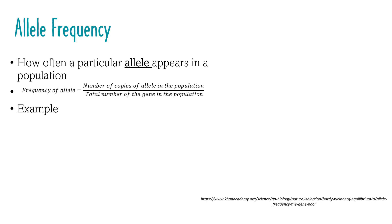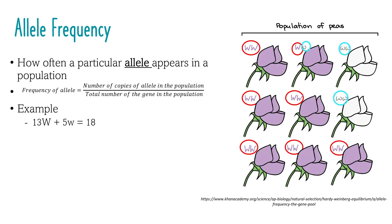Let's look at an example. Mendel studied a gene that controls flower colour in pea plants. This gene comes in a white allele, represented by lowercase w, and a purple allele, represented by uppercase W. If we look at the two alleles in each plant and count how many uppercase W copies are present, we find that there are 13. Counting lowercase w copies, we find 5. This means the total number of gene copies in the whole population is 18.